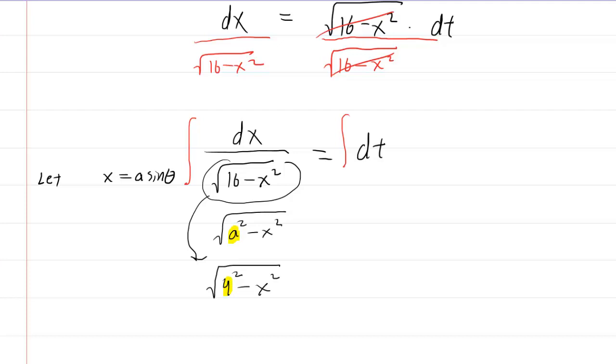So in essence, what we're going to do is let x, in this particular case, equal 4 sine of theta. This is known as trigonometric substitution. And then the next step would be to differentiate both sides of this equation. So we would have dx is equal to 4 cosine of theta d theta.